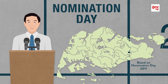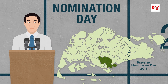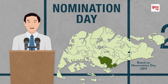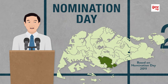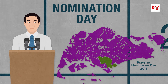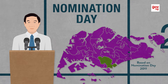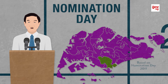At the close of the nomination period, if a constituency is uncontested, the RO declares that the candidate or candidates of that constituency have been returned as MPs. For constituencies where more than one candidate or group of candidates stand nominated, the RO will adjourn the election to a date where a poll will be taken.